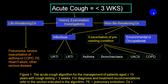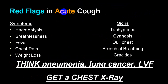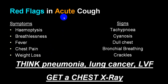Red flag signs with acute cough: if a person comes with hemoptysis, severe breathlessness, very high-grade fever — usually suspect pneumonia; if there is weight loss along with this, think of lung malignancy. Examination findings: dullness over the chest, bronchial breathing, and crackles suggest pneumonia or lung malignancy superinfected with acute infection. Orthopnea with cyanosis is more in favor of left ventricular failure.